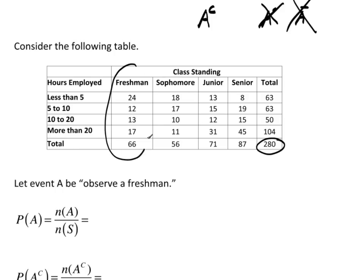And I have the totals worked out for you here. So right here, that is the event freshman. There are 24 in less than 5, 12 in 5 to 10, 13 in 10 to 20, and so forth, for a total of 66.